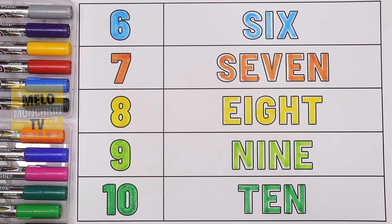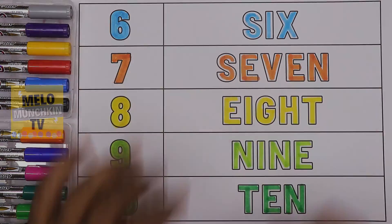So we have completed our numbers from one to ten along with the spelling and colors. I hope you liked this video, kids. If you like it, hit a thumbs up and share this video with your friends. See you in my next video — till then, take care and bye bye!